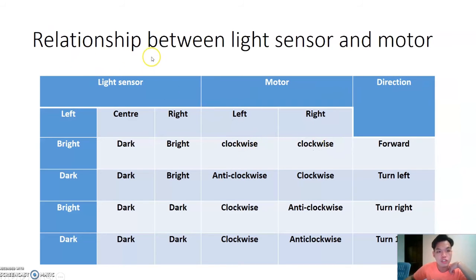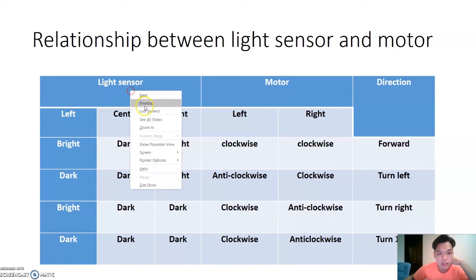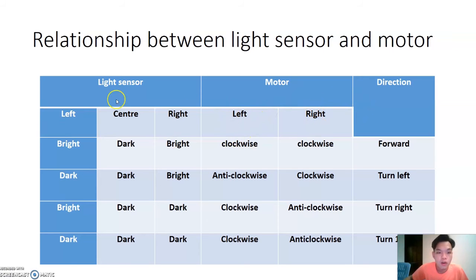So now I will present the relationship between light sensor and motor, which is how the robot is moved. We have 3 light sensors: left light sensor, center light sensor and right light sensor. And we have left motor and right motor. We have 4 conditions. First, when the robot wants to go forward, the left light sensor will sense nothing, and right light sensor also will sense nothing. Only the center light sensor senses a black line. So the left motor and right motor move clockwise.